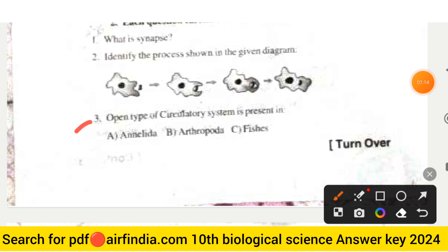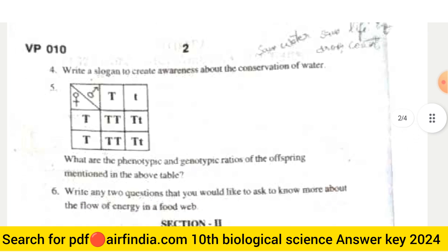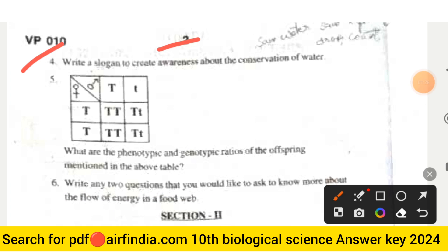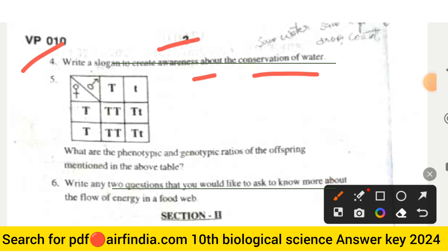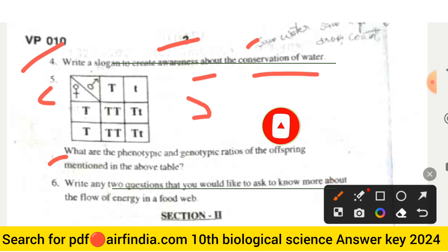The third question is: Which type of circulatory system is present in Annelida, Arthropoda, and fishes? Identify the true answer. The fourth question on the second page is: Write a slogan to create awareness about the conservation of water. The fifth question asks: What are the phenotypic and genotypic ratios of offspring mentioned in the above table?